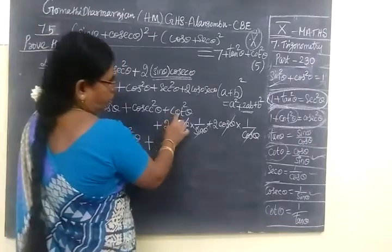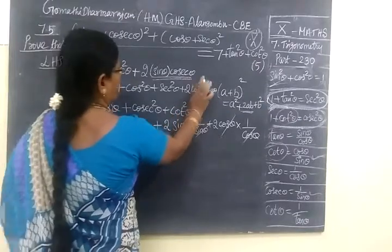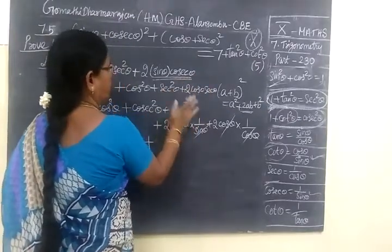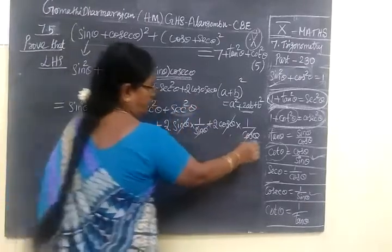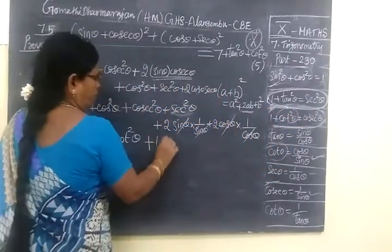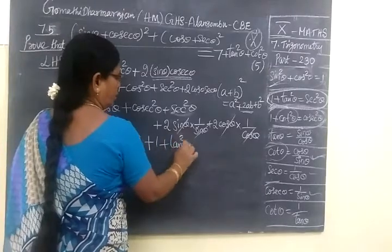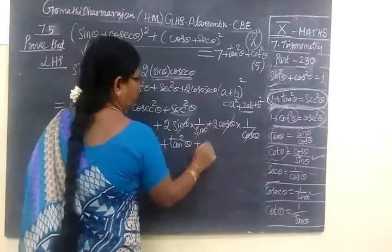Then in this case, cot square is cosec square. Mark this now. Cosec square theta. So cosec square theta can be written as 1 plus tan square theta.